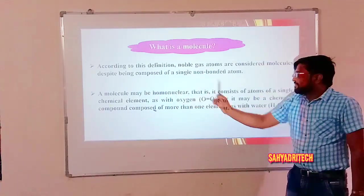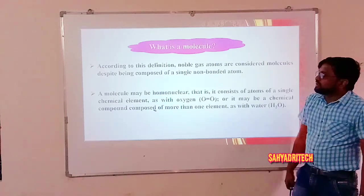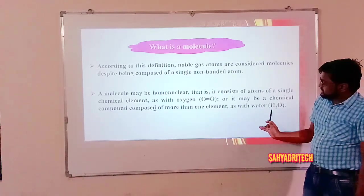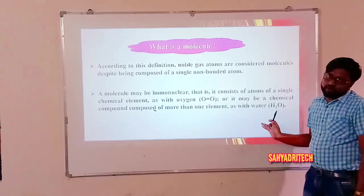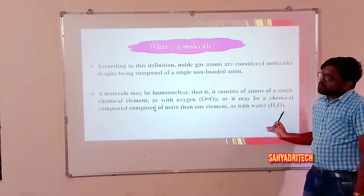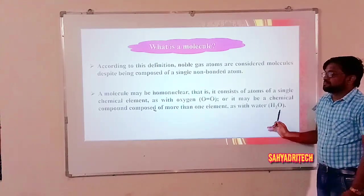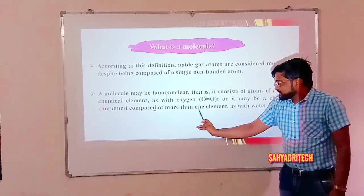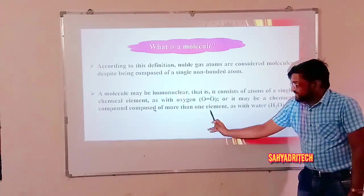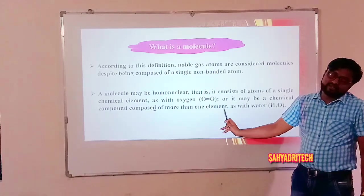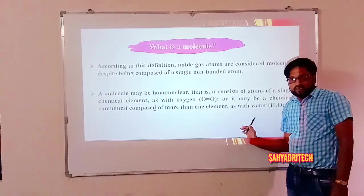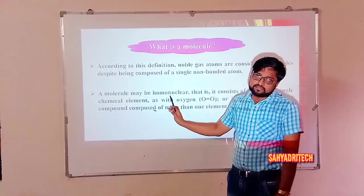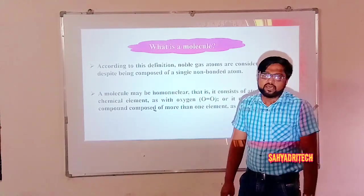Similarly, a molecule may be a heteronuclear species. For example, water — a molecule of water has two hydrogen atoms and one oxygen atom. If a molecule contains more than one type of element, it is considered a heteronuclear molecule; if it has only one type of atom, it is a homonuclear molecule.